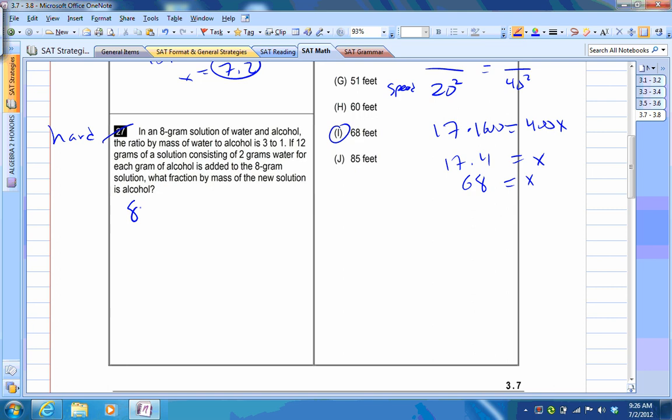So for the 8 gram solution, if you think about it, you're going to have 6 grams of water and 2 grams of alcohol. That's because the ratio is 3 to 1. So that's 3 parts to 1 part, that's 4 parts total. But if you have 8 grams, if you think about it, you could say 3x plus x equals 8, 4x equals 8, x equals 2. So I multiplied each of these parts of the ratio by 2 to get 6 and 2.